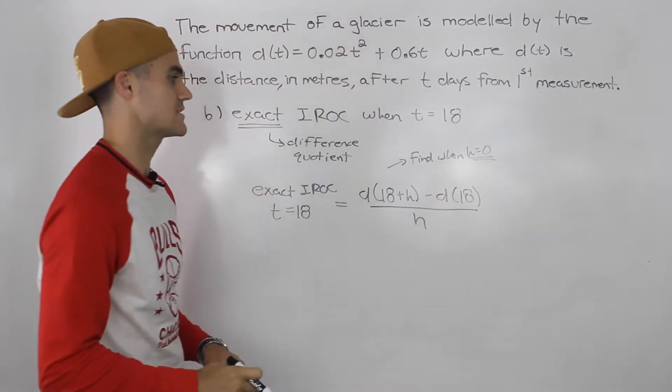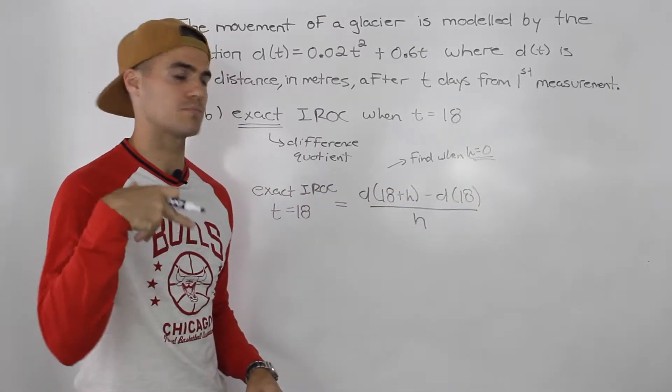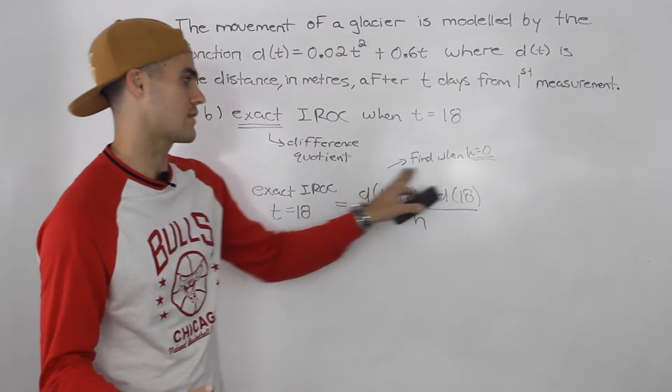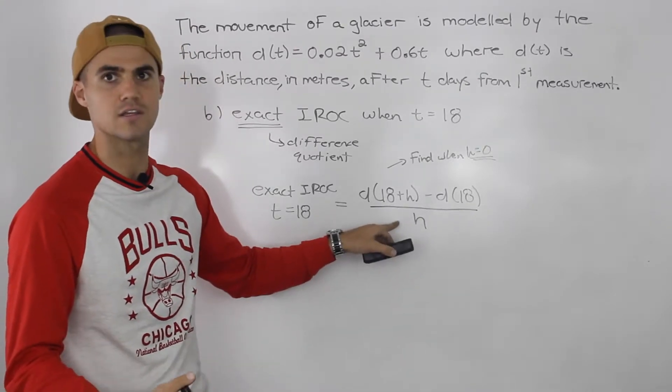That would give us the exact instantaneous rate of change. But plugging in zero for h, if you remember, that's going to be at the end of this expression. Once we simplify, we have to get rid of that h in the denominator.